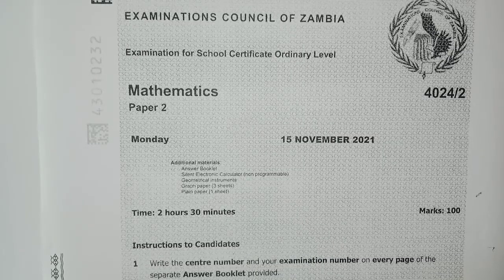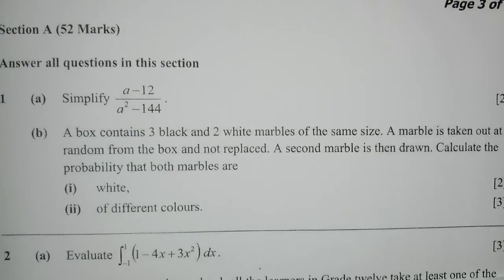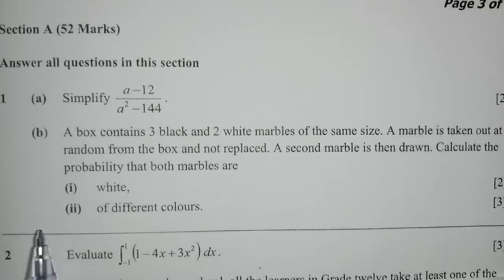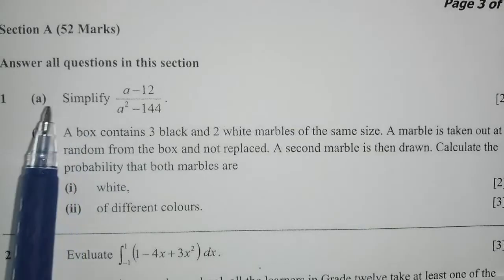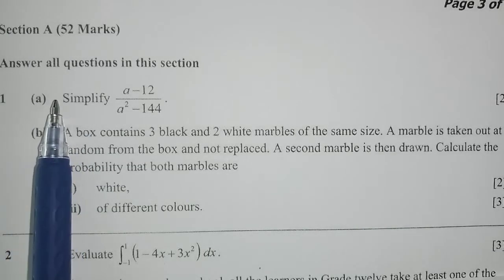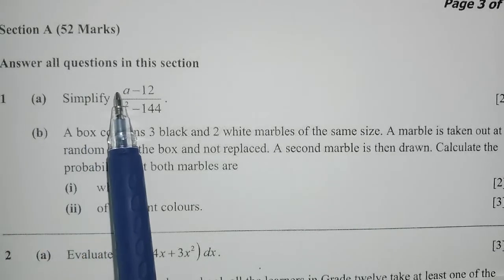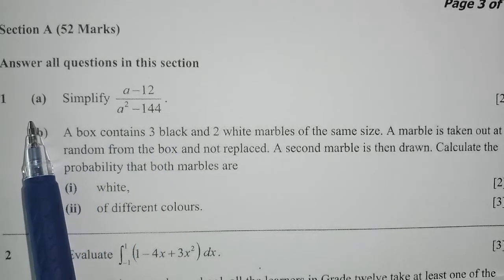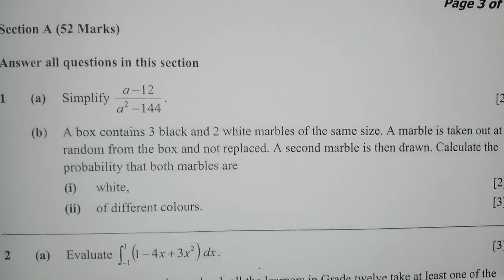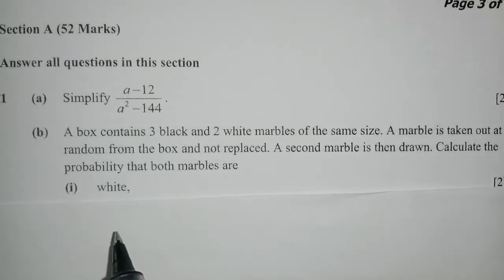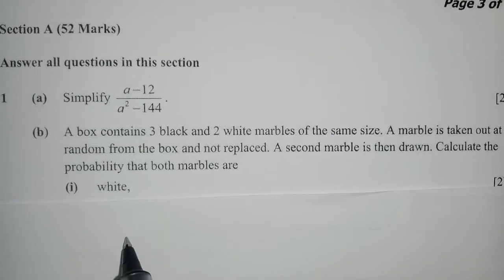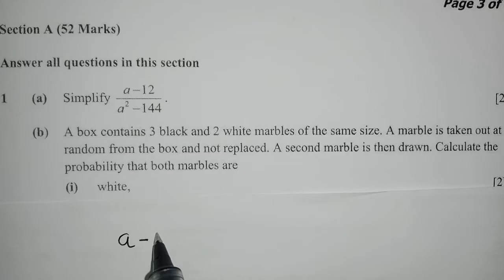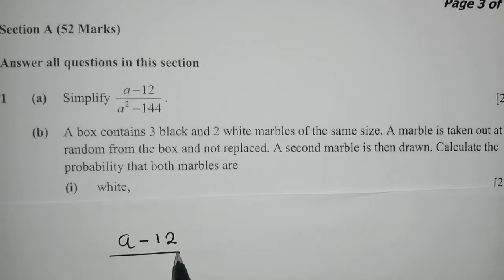Let us start. Section A, question 1, it's 52 marks. They're saying answer all questions in this section. Question 1A is to simplify: a minus 12 over a squared minus 144.